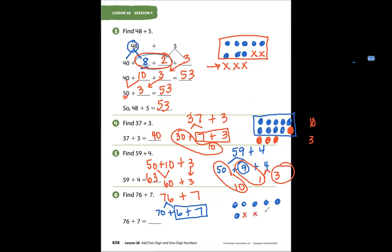So there's 4 from the 7: 4, 5, 6, 7. I made a group of 10. How many left over? 3. One 10 and three ones—13. So now 6 and 4 make 10. 70 plus 10 equals 80. 80 plus 3 equals 83.